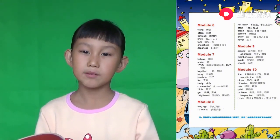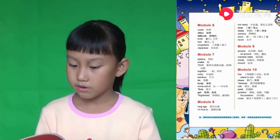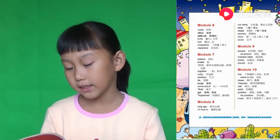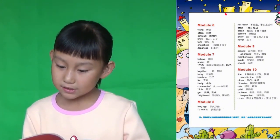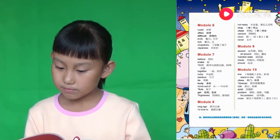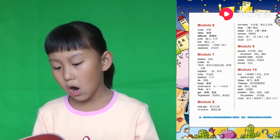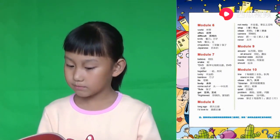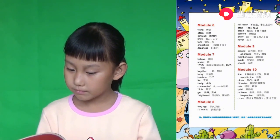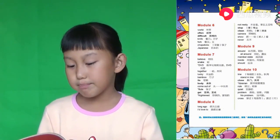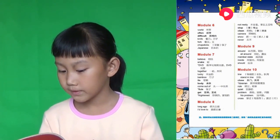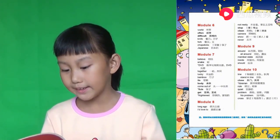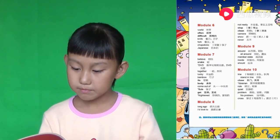请把书翻到第67页 Module 9. Around. All around. Member state. Inside. Should.